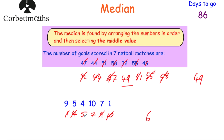If the two values in the middle are exactly the same — for instance, if it was eight and eight — the median would be eight because in the middle of eight and eight is eight. So we've looked at the mode and the median. The mode is the most common value. The median is the middle value once you put them in order.